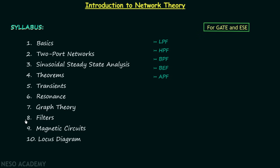Chapter number 8 is Filters. I will explain low pass filter, high pass filter, band pass filter, band elimination filter, and the all pass filter. Chapter number 9 is Magnetic Circuits, where I will explain how to deal with dot polarity. The tenth and final chapter is Locus Diagram.